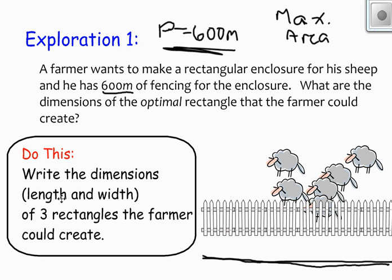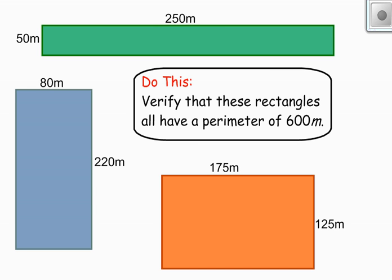So here's what I want you to do. Take a pen and a piece of paper, and I want you to write down the dimensions, meaning the length and the width, of three rectangles that the farmer could make. And again, it has to have a perimeter of 600 meters. Don't worry about maximizing area yet. I just want you to write three rectangles that the farmer could create with this much fencing. Here are three rectangles that I got. So one of them is a 50 by 250 meter rectangle, another one could be 80 by 220, or maybe 175 by 125. So can you take a moment and verify that these rectangles all have a perimeter of 600 meters.